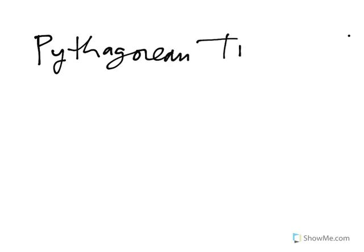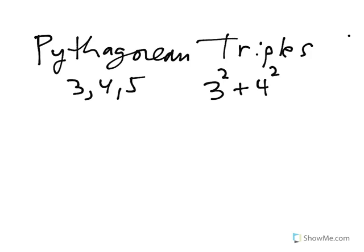A Pythagorean triple, the most famous Pythagorean triple is 3, 4, 5. And what's special about 3, 4, 5 is that if I take 3 squared and add it to 4 squared, I get 9 plus 16, which is 25, which itself is a perfect square.